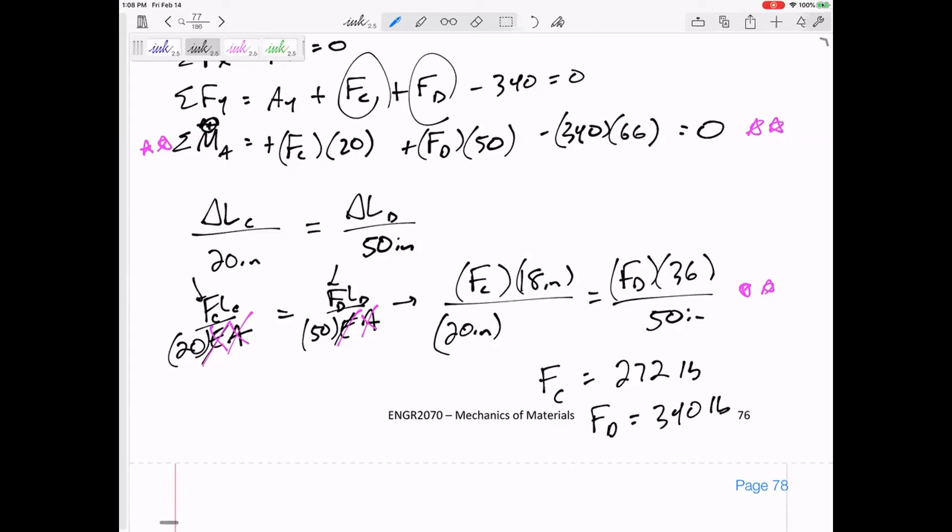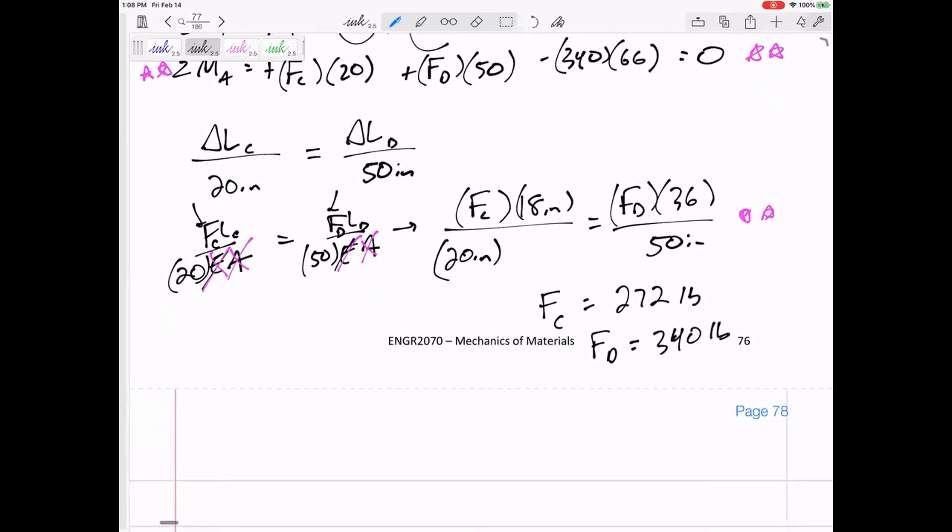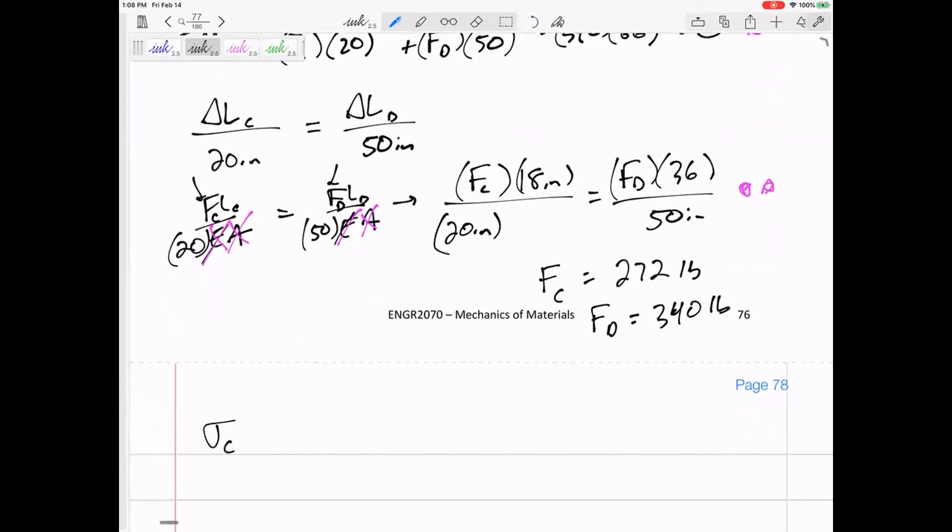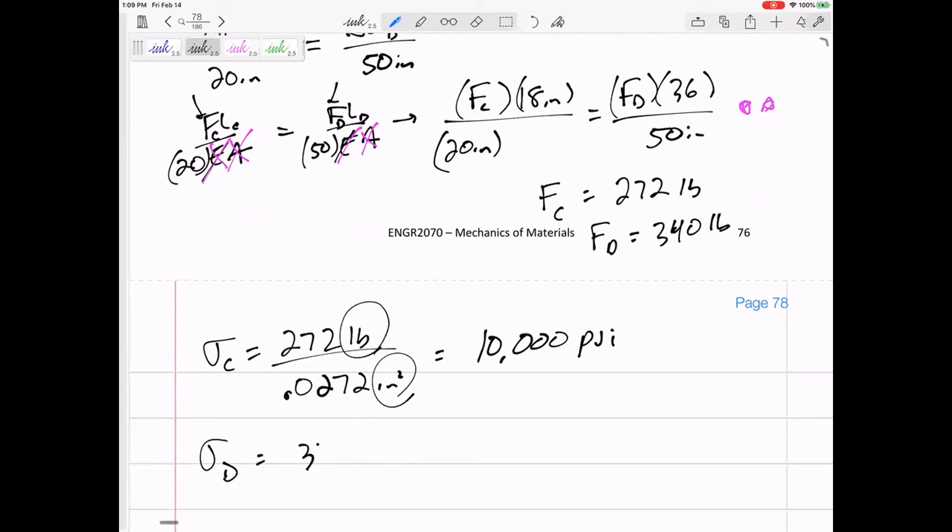Will it always equal the force? No. We could probably figure out why it is equal to the same force. But the question didn't ask for that, the question asked for the stress. The stress in wire C would be 272 pounds over the area, 0.0272 inches squared. So 10,000 pounds per square inch, PSI. Cable D, the force divided by the area, 12,500 PSI.